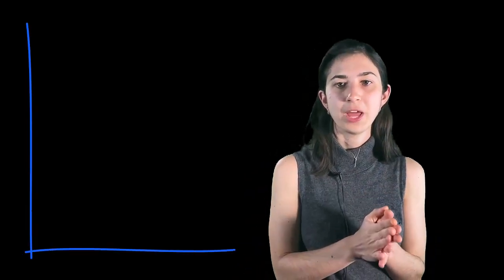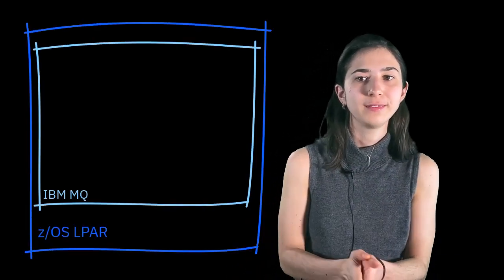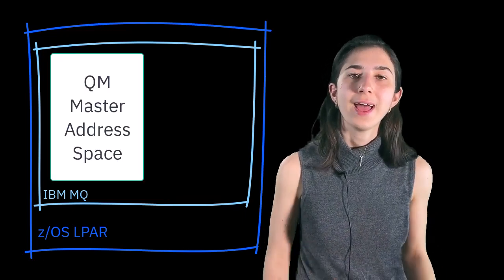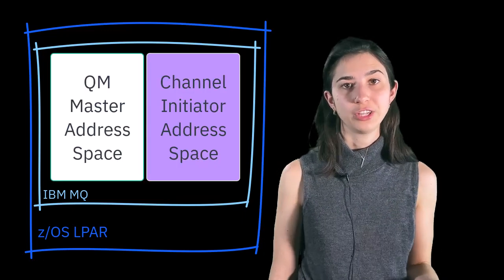On z/OS, a standard queue manager takes up two address spaces. The first is called the queue manager master address space, and the second is called the channel initiator address space.